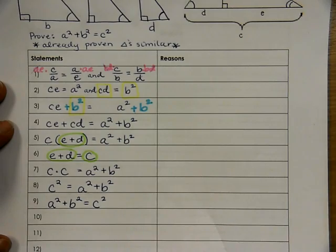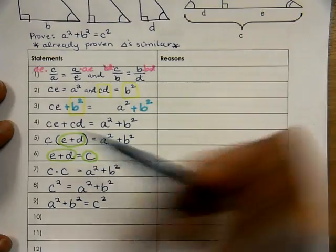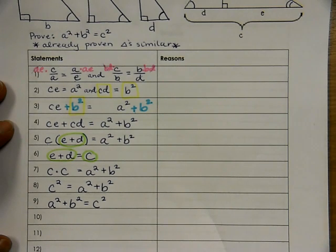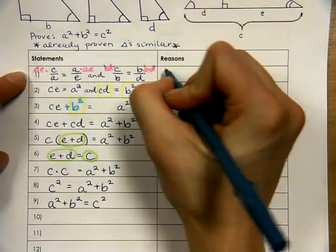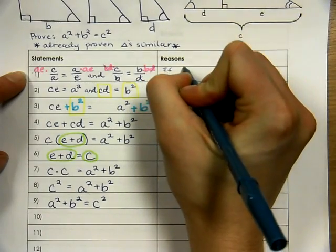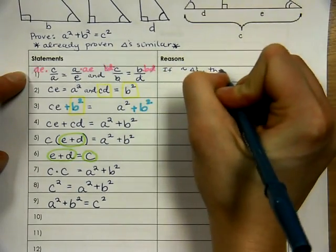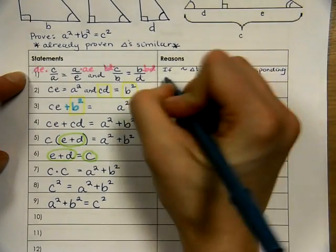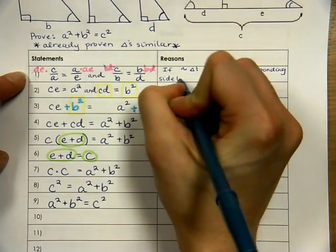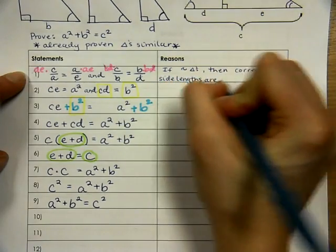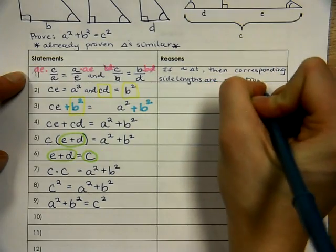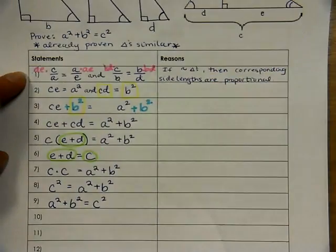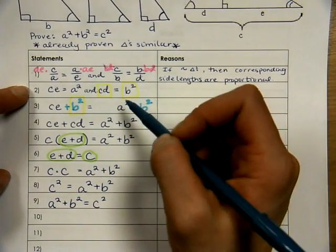What I would like you to do right now is to pause the video and try and come up with the reasons for each one of these statements. Now that you have tried this on your own, let's go through these together. We said that if we have similar triangles, then the corresponding side lengths are proportional. It allows us to write a proportion. From there, we cross-multiplied. But really, all it was was multiplying by both denominators.